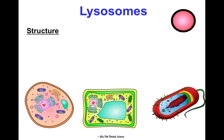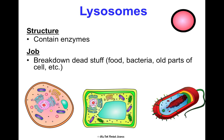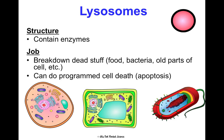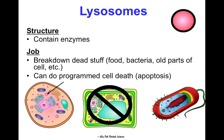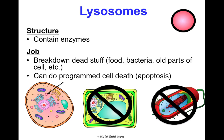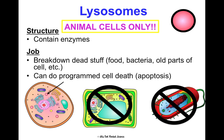Lysosomes are a bit indistinguishable in pictures, so you likely won't be asked to label them. They contain enzymes, and their job is to break down dead stuff, food, bacteria, old parts of the cell, and harmful substances. They can also carry out programmed cell death, or apoptosis, which we'll discuss more in concept three. Lysosomes are found only in animal cells — not in plant cells or prokaryotic cells.